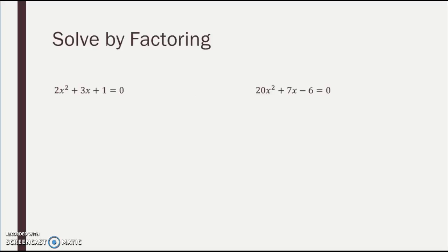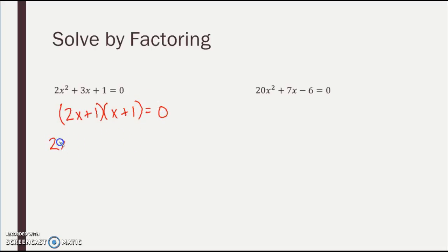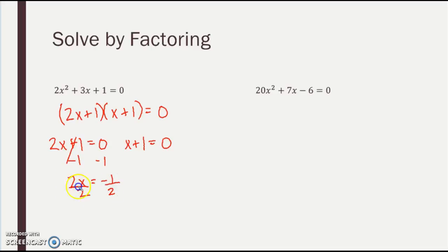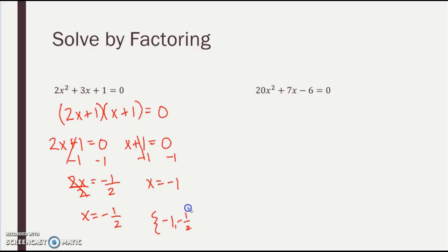Now, solving by factoring — same thing we did before, but you might have an extra step. We found that 2X squared plus 3X plus 1 factors to 2X plus 1 times X plus 1. To solve, I set both factors equal to 0. Subtract 1 from both sides: 2X equals negative 1, then divide by 2 — X equals negative one half. For the other factor, subtract 1: X equals negative 1. So my solution set is X equals negative 1 and negative one half.